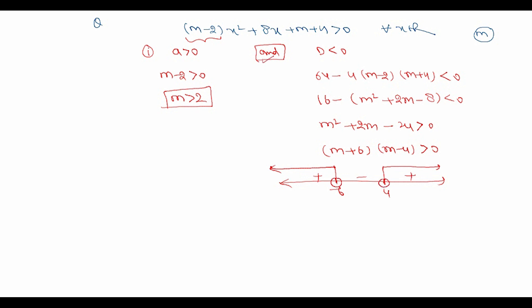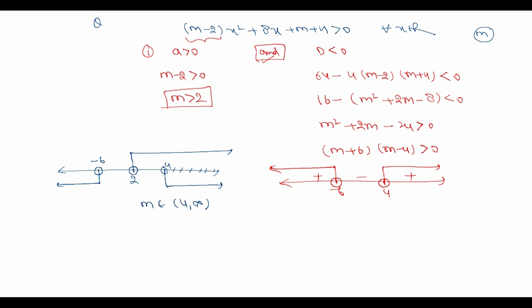Since both conditions must hold simultaneously, we take their intersection. Plotting on a number line: the first condition gives m > 2, and the second gives m < -6 or m > 4. The intersection of these two conditions is m > 4, so m belongs to (4, ∞). Therefore the least integral value of m is 5.